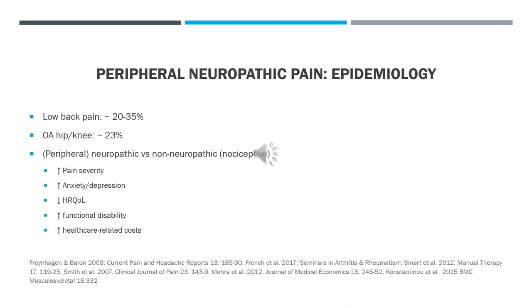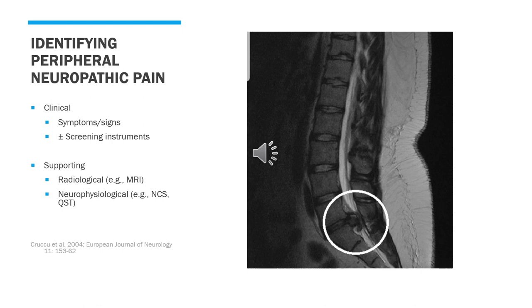Issues of increased pain severity, anxiety, depression, and greater levels of functional disability are important to acknowledge, as we know from the low back pain literature that these features may contribute to poorer outcomes and a poorer prognosis. Identification of peripheral neuropathic pain clinically may be based on pattern recognition of clusters of symptoms and signs, augmented through neuropathic-specific screening instruments, and supported by radiological imaging such as MRI scans or neurophysiological tests such as nerve conduction studies or quantitative sensory testing.